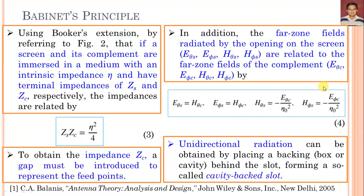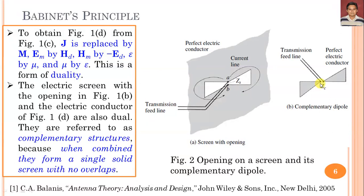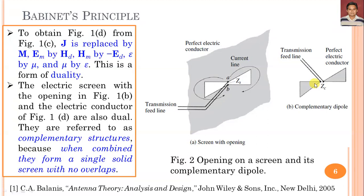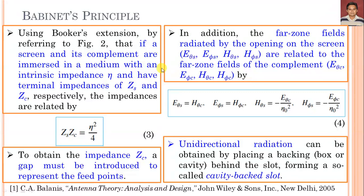To obtain the impedance Z_C, the impedance of the complementary structure, a gap must be introduced to represent the feed point. In addition, the far field radiated by the opening on the screen — E_θ(S), E_φ(S), H_θ(S), H_φ(S) — are related to the far-zone fields of the complementary structure E_θ(C), E_φ(C) as follows: E_θ(S) = H_θ(C), E_φ(S) = H_φ(C), H_θ(S) = −E_θ(C) / η², and H_φ(S) = −E_φ(C) / η.